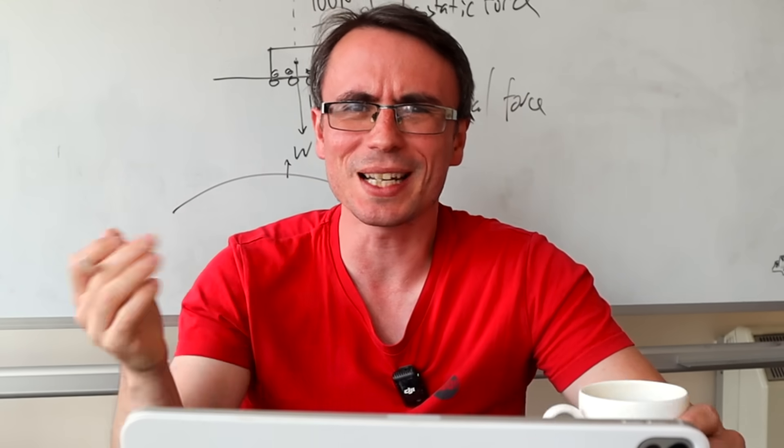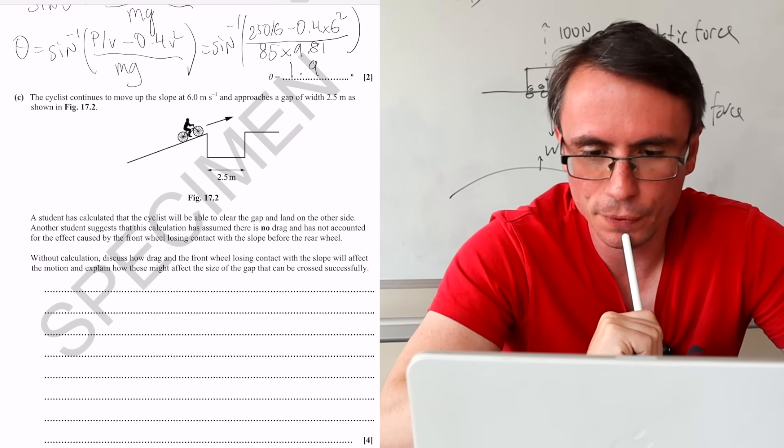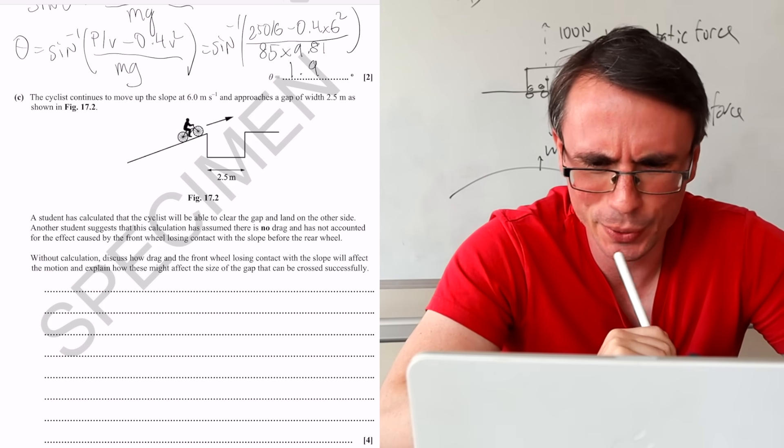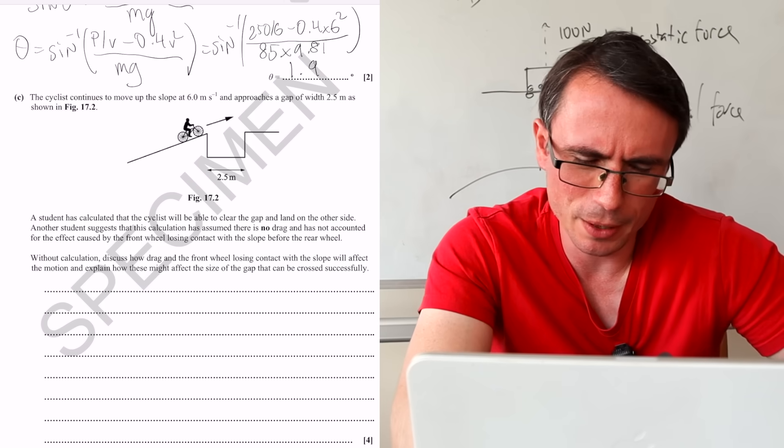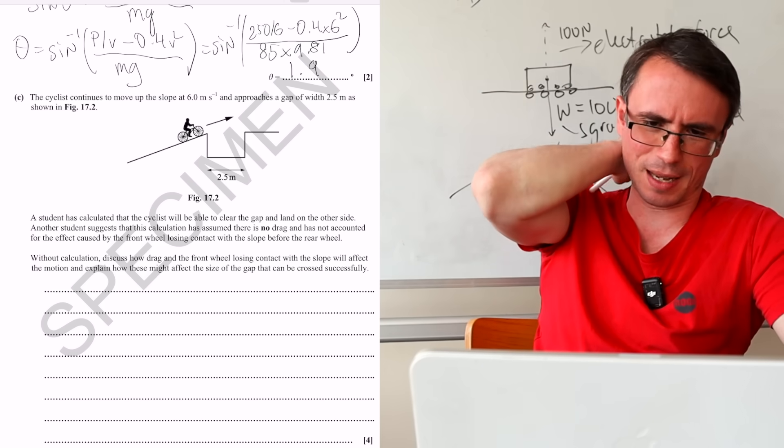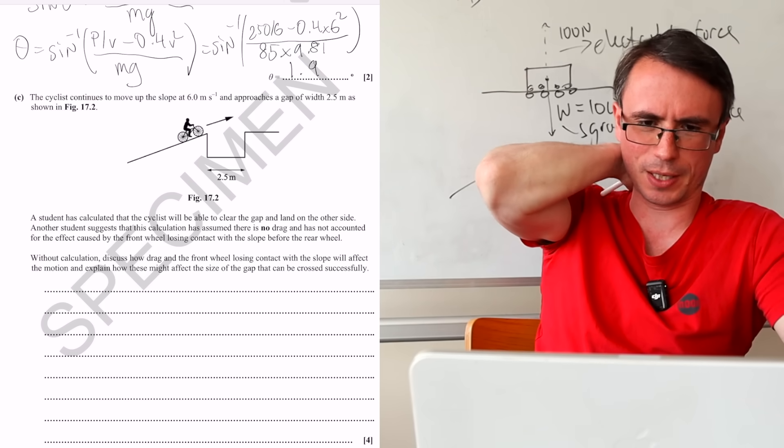Wait, without calculation, but I really enjoy calculations. Discuss how drag and the front wheel losing contact with the slope will affect the motion and explain how these might affect the size of the gap that can be crossed successfully.